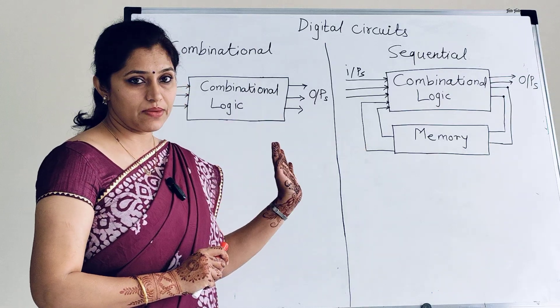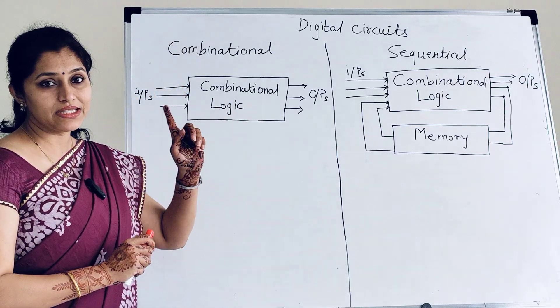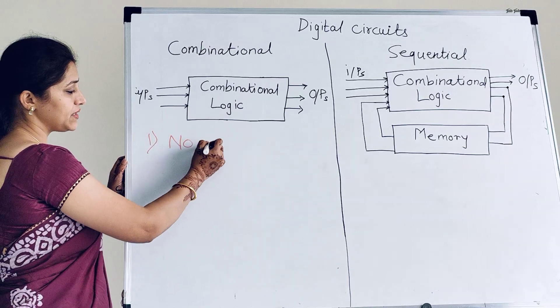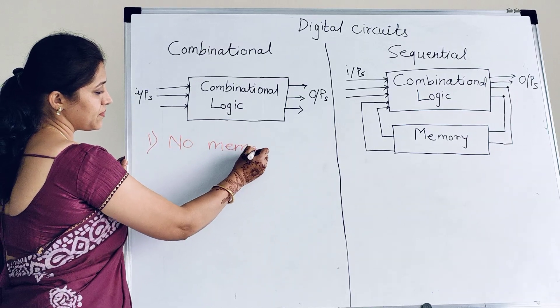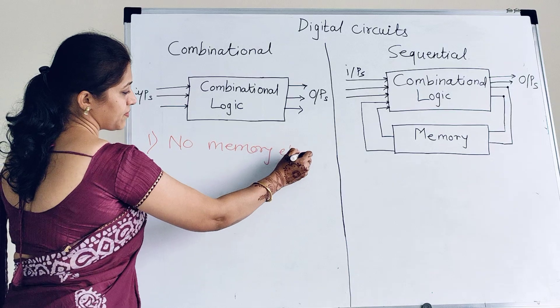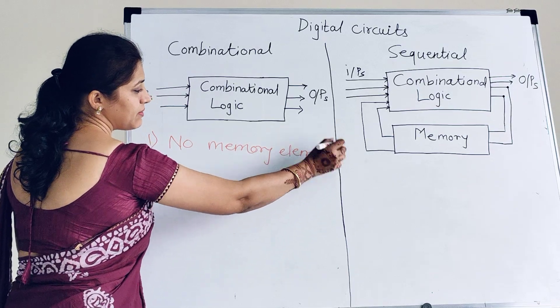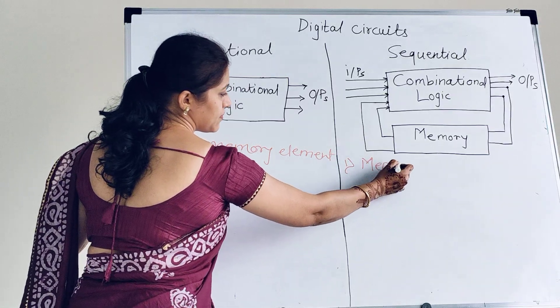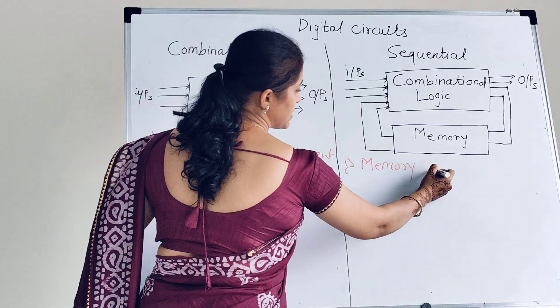Let's differentiate them. In combinational circuit, memory element is absent. So the very first difference is no memory element. Or memory element is absent. Here, memory is present. Or memory element is present.